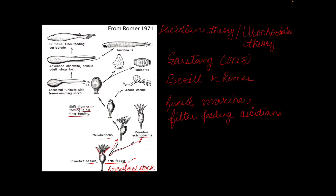As they shifted from arm feeders to gill filter feeders, their pharynx became perforated. Gill slits were developed in the pharynx. We can say that the external tentacles were replaced by an internal filtering apparatus. Food is now trapped inside the pharynx and water leaves through the gill slits.